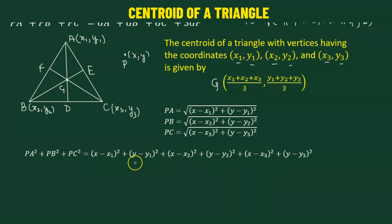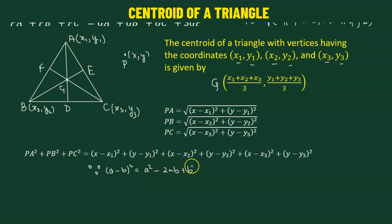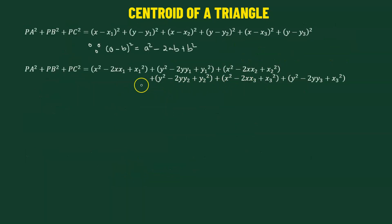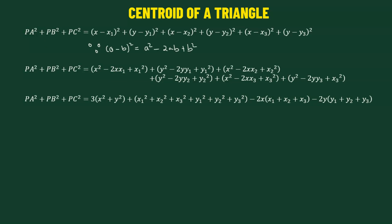Now we'll expand each of the terms using the formula (A − B)² = A² − 2AB + B². After performing the expansion, we combine the like terms and rewrite, obtaining the expression for PA² + PB² + PC² in terms of the coordinates of A, B, C and point P.